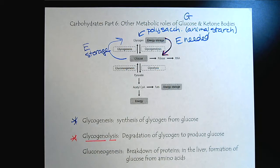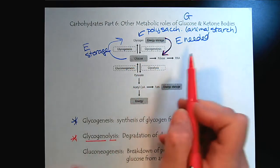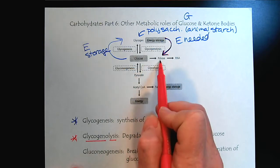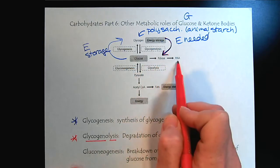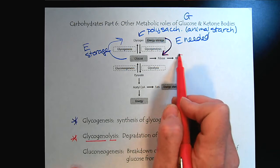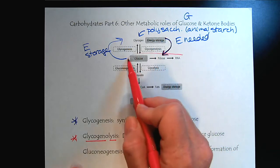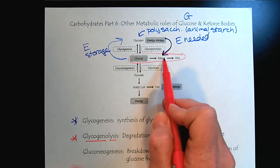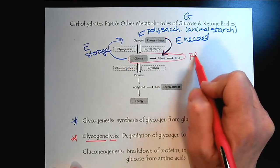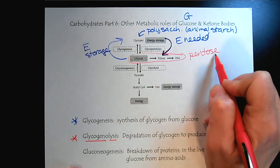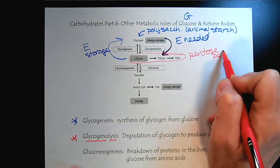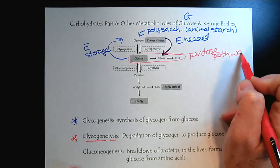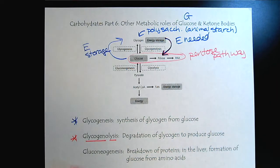We won't look closely at this next branch, but glucose can be converted into ribose, which we need for RNA. Because we're going from a six-carbon sugar to a five-carbon sugar, we call this the pentose pathway.